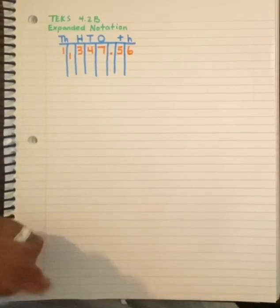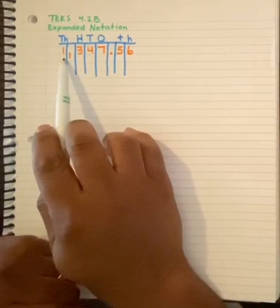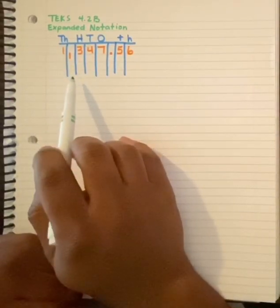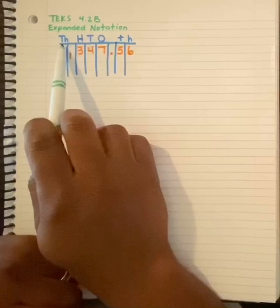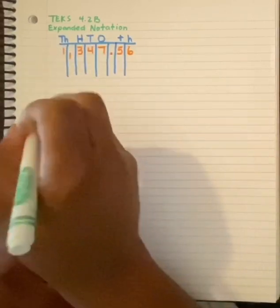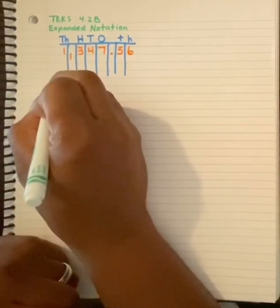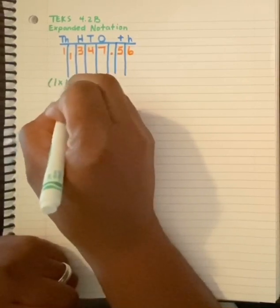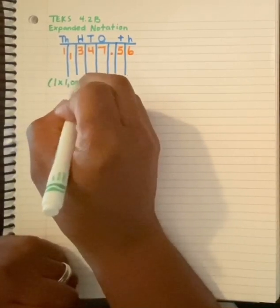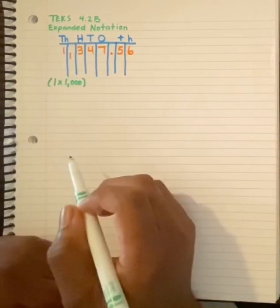Now let's get into expanded notation. Very simple. Each digit represents a value. This is my thousands. So this would be one group of one thousand, because I have one in the thousands place.